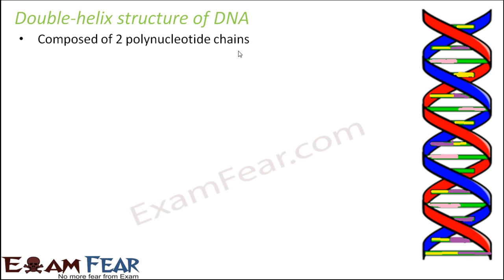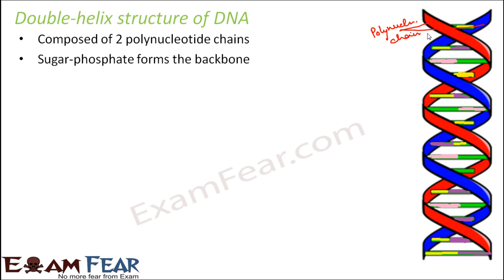The double helix is composed of two polynucleotide chains — the red one and the blue one, the two ribbon-like structures. Sugar phosphate forms the backbone; they are made up of the pentose sugar and the phosphate group. The sugar and phosphate of multiple nucleotides are joined together by the phosphodiester bond.